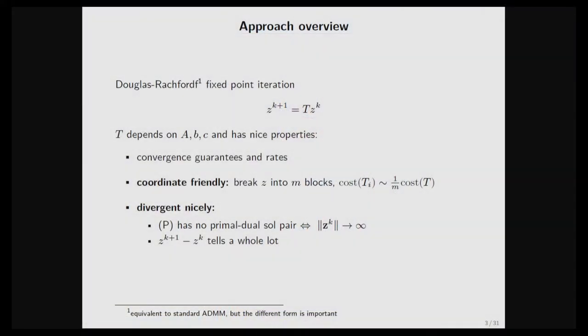The second part argues that using the same algorithm, the sequence diverges in a very nice way when the problem doesn't have a solution. When the conic program doesn't have a primal-dual solution pair, you can show not only that it diverges, but that the sequence diverges to infinity. However, the way it diverges tells you a great deal — for example, it gives you a separating hyperplane between two non-intersecting sets, and tells you how to fix the problem to make it feasible.